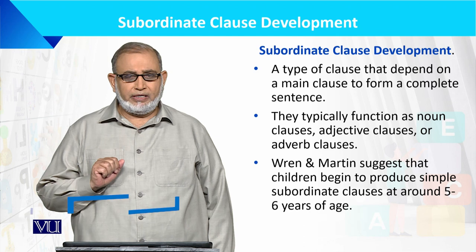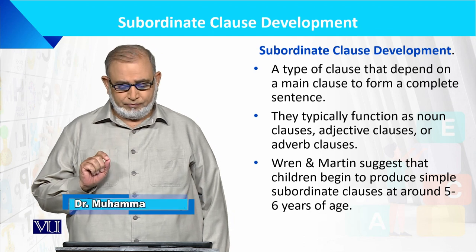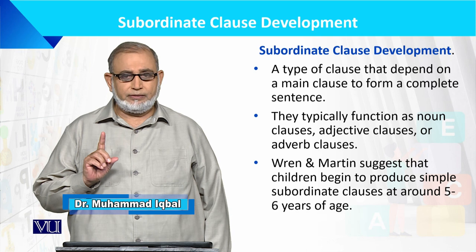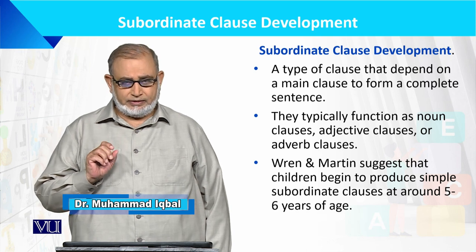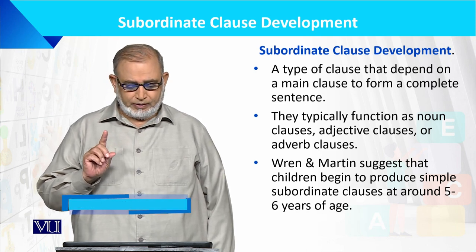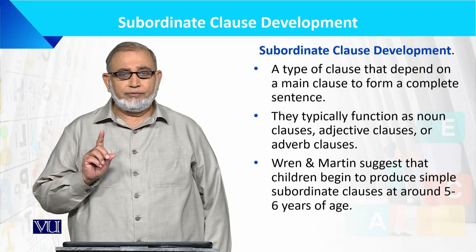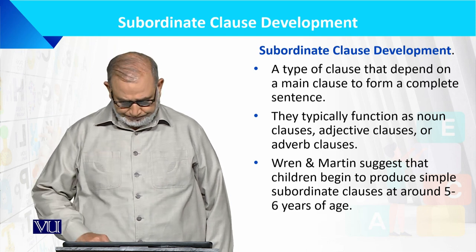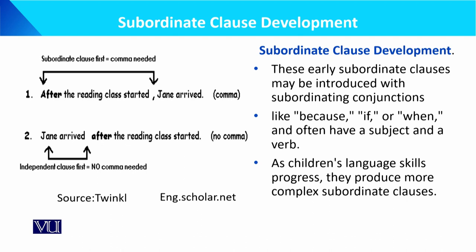Ren and Martin suggest that children begin to produce these classes around the age of 5 to 6 years. These early subordinate classes may be introduced with subordinating conjunctions like 'because,' 'if,' or 'when,' and often have a subject and a verb.